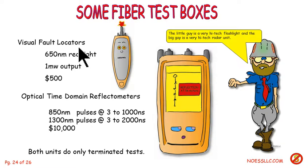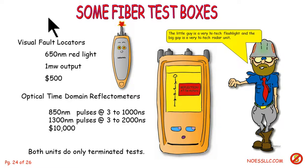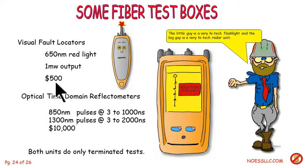Basically a visual fault locator is a flashlight with a red beam. You attach the fiber to this end and go to the other end and see if red light is coming out, because you cannot see the working optics. They'll warn you over and over again — even when they're on, you can't see that. So you never want to look in a fiber if you're not absolutely certain it's not running signal. This is visual light at 650nm — essentially a $500 flashlight.